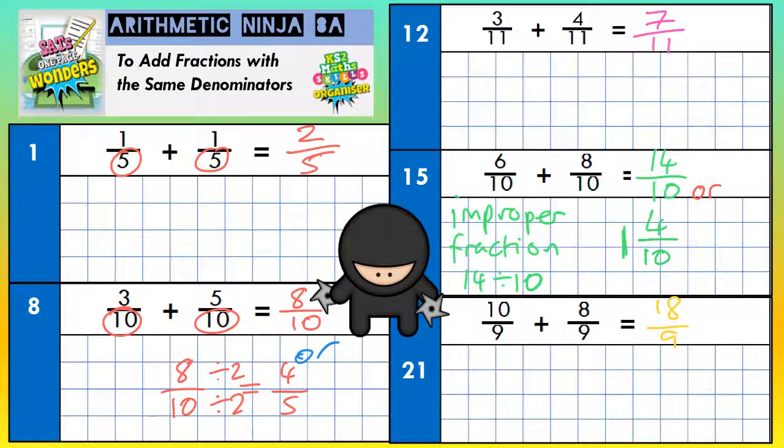Now we've got a slight problem with this one. Because it is eighteen-ninths, eighteen divided by nine is actually exactly two. Two whole ones. And if the improper fraction works out as an exact whole number with nothing left over, in SATs you may lose a mark unless you convert it into that whole number.